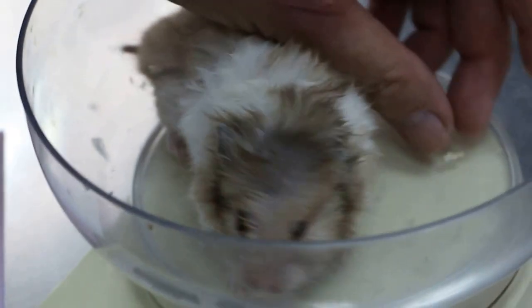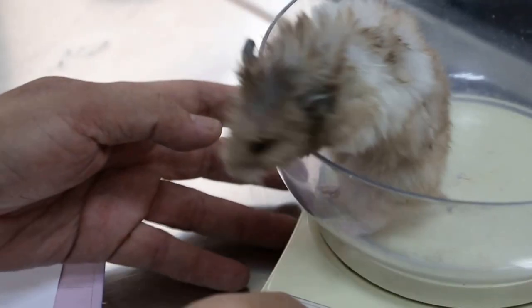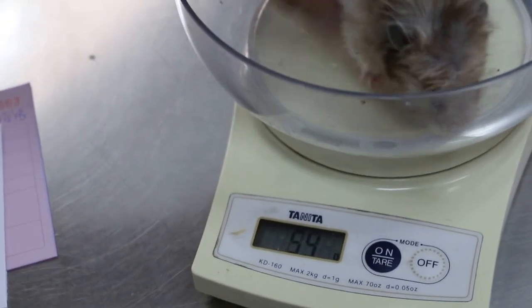One of the teeth broke, right? Yeah, the upper one. So it's only 76 grams. Let's show here, 76 grams. It's very thin, considered very thin already for a Syrian hamster.